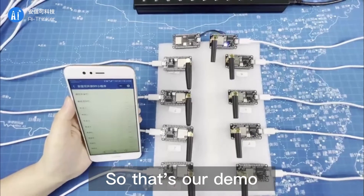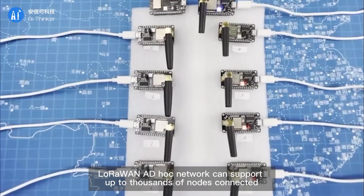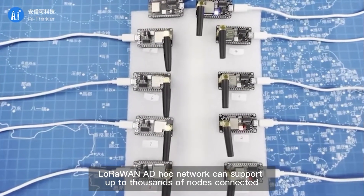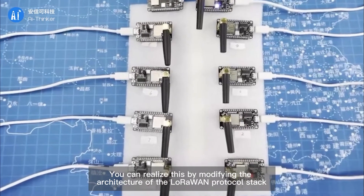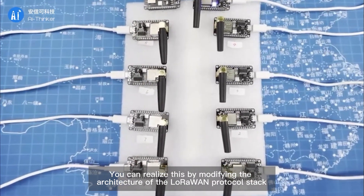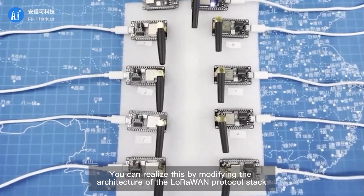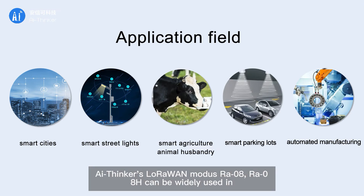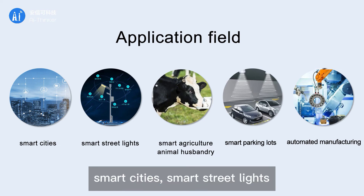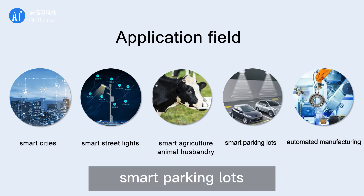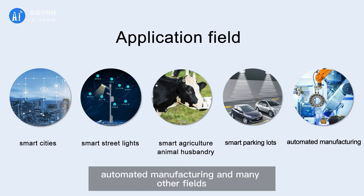So that concludes our demo. The LoRa ad hoc network can support up to thousands of nodes connected, which can be realized by modifying the architecture of the LoRa protocol stack. AI Thinker's LoRa modules IA08 and IA08H can be widely used in smart cities, smart street lights, smart agriculture and animal husbandry, smart parking lots, automated manufacturing, and many other fields.